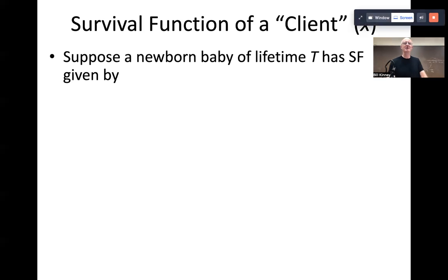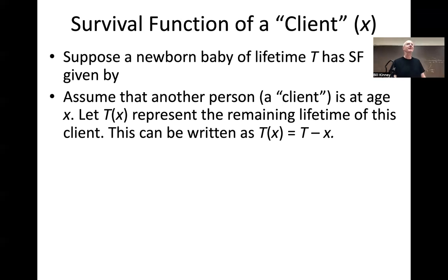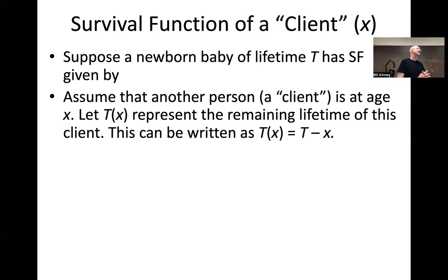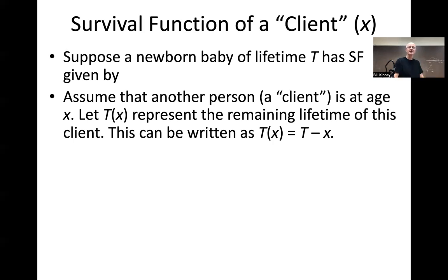Suppose a newborn baby of lifetime capital T has survival function given by sigma of T. Assume that another person — a client — is at age X. Let T of X represent the remaining lifetime of this client. If we assume that capital T, as a random variable with a PDF, CDF, and survival function, is a good model for a newborn baby, we could also assume that T minus X would be a good model for this client's remaining lifetime.